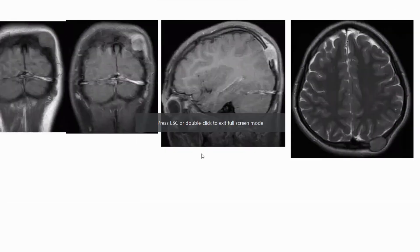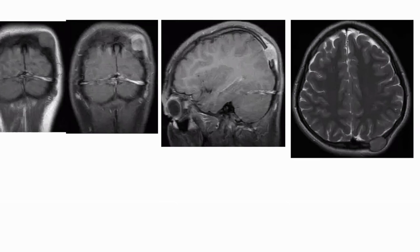On T1 and T2, I can appreciate an abnormal signal intensity lesion identified in the left parietal region. It is iso to hypo on T1, hyperintense on T2, and showing post-contrast enhancement. This seems to arise from the dura and is extending, causing a bulge over the soft tissues. This could represent eosinophilic granuloma.